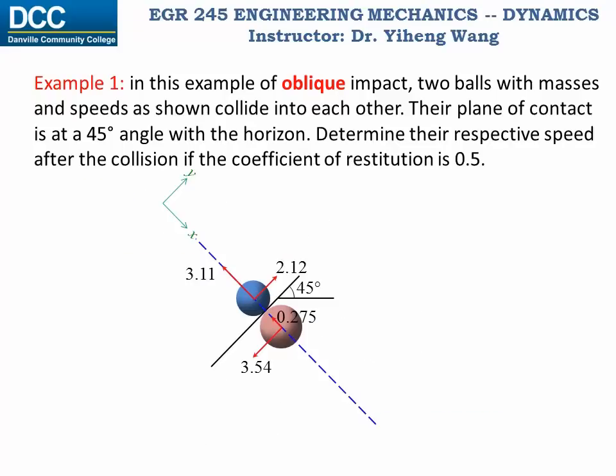And now since we know the x and y components of the final velocities of these two particles after the collision, we can easily determine the magnitude of their respective final velocity. And that completes this problem, but if you like to, you can also calculate the direction of the two velocities.